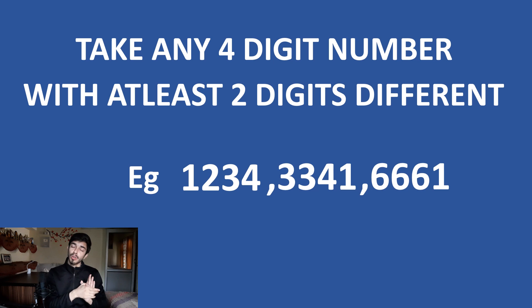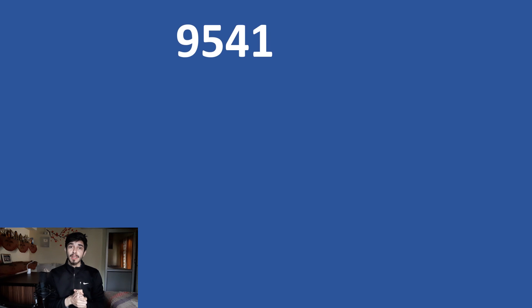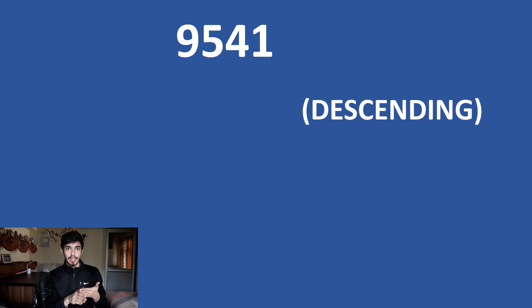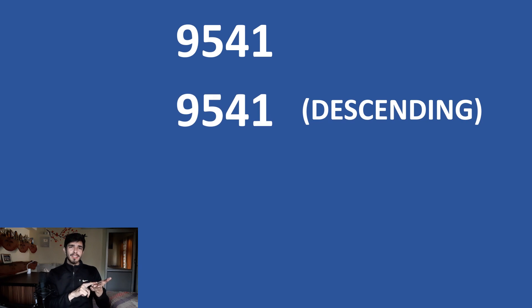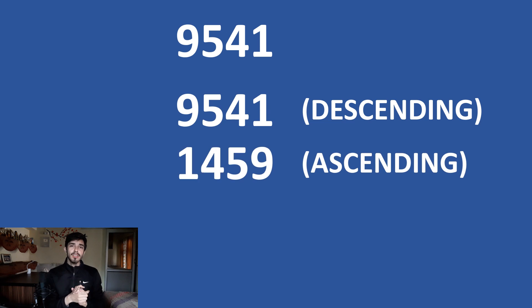Also, leading zeros are allowed — for example, 0009 is also allowed. So as an example we take 9541. What we will do is take that number and arrange its digits in descending order. For 9541 it's already in descending order. Now we arrange its digits in ascending order, so it will be 1459.